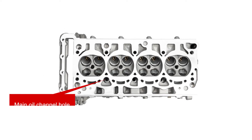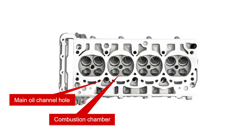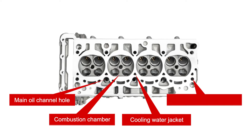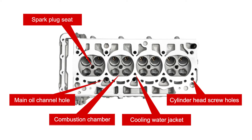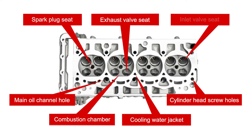Key components labeled on the cylinder head include: the main oil channel hole, combustion chamber, cooling water jacket, cylinder head screw holes, spark plug seat, exhaust valve seat, and inlet valve seat.